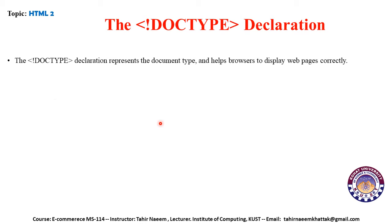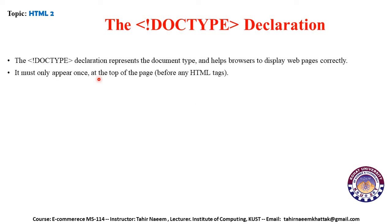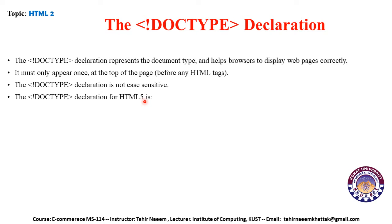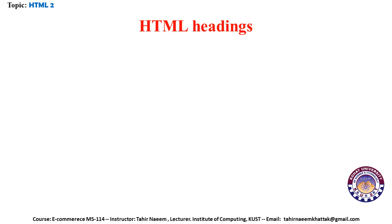The DOCTYPE declaration represents the document type and helps the browser display web pages correctly. It must appear only once at the top of the page, before any HTML tags. The DOCTYPE declaration is not case sensitive. The DOCTYPE declaration for an HTML5 file is simply DOCTYPE HTML.